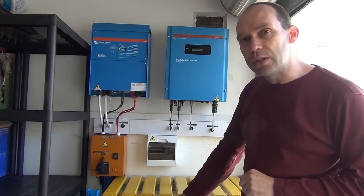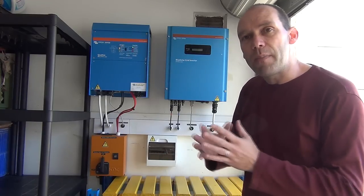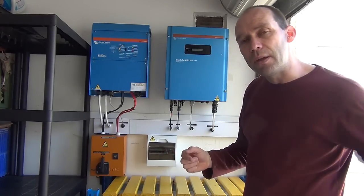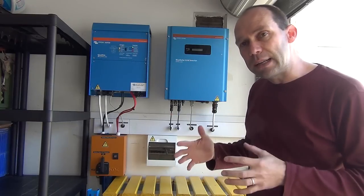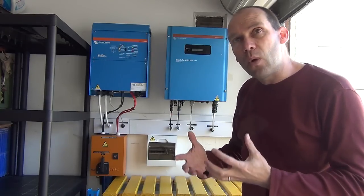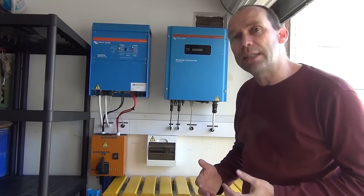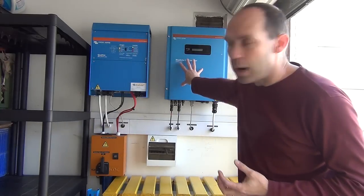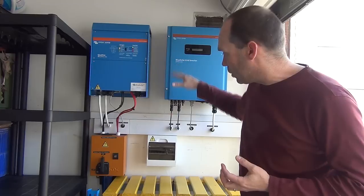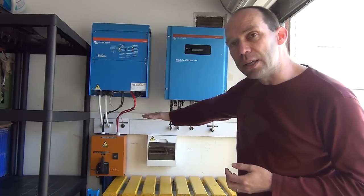The power from the solar panels comes into this grid tie inverter. This grid tie inverter takes the DC power and directly turns it into AC power so it can feed the house. It doesn't have to go into the batteries first. In some systems you have a battery charge controller and the solar panels feed directly into that. That for a typical grid-connected house is not the most efficient system.